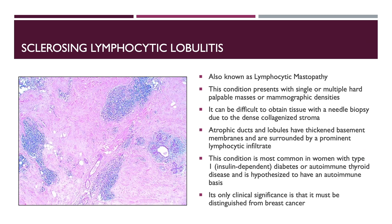This condition presents with single or multiple very hard palpable masses or mammographic densities. It can be difficult to obtain tissue with a needle biopsy due to the dense, collagenized stroma. Atrophic ducts and lobules have thick basement membranes and are surrounded by a prominent lymphocytic infiltrate, as you can see in the image to the left. This condition is most common in women with type 1 insulin-dependent diabetes or autoimmune thyroid disease and is hypothesized to have an autoimmune basis. Its only clinical significance is that it must be distinguished from breast cancer.